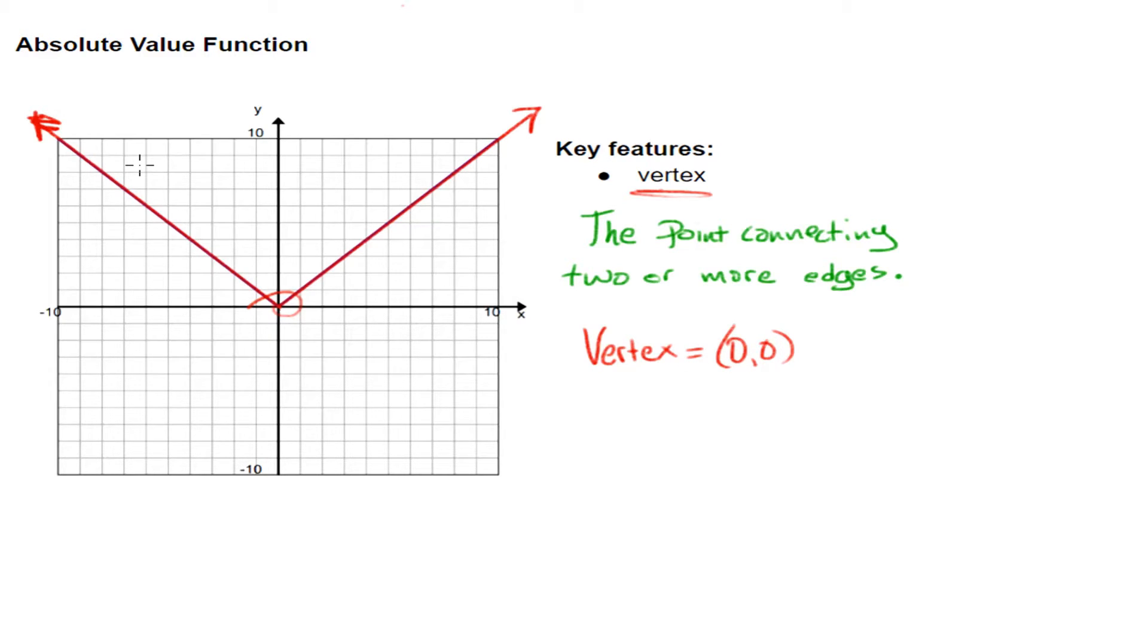If we go back to one of the examples I used before, which was an absolute value function going like this, then my vertex would be right here. So, that would be at (4, -4).